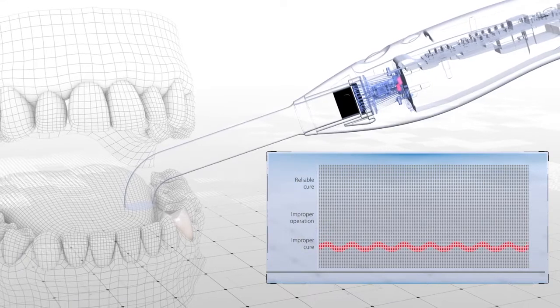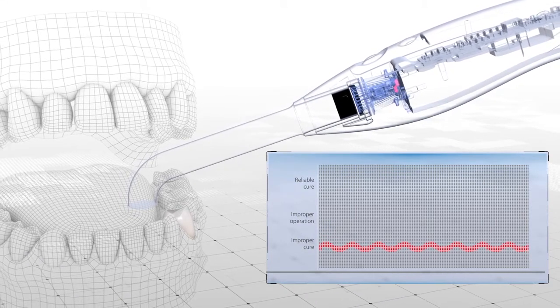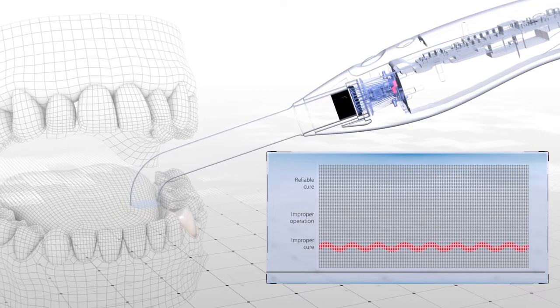BluePhase PowerCure will automatically interrupt the exposure cycle. In addition, it will vibrate three times and emit an acoustic signal to alert the operator to the need to repeat the exposure cycle.